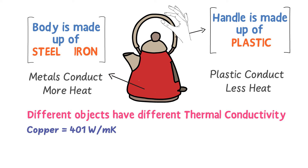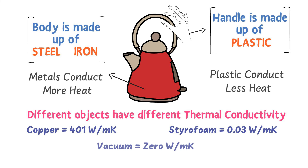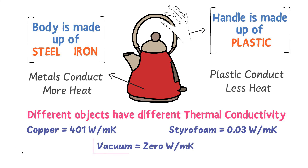Different objects have different thermal conductivity values. For example, the thermal conductivity of copper is 401 watts per meter kelvin. The thermal conductivity of styrofoam is 0.03 watts per meter kelvin. The thermal conductivity of vacuum is 0 watts per meter kelvin, meaning there is no thermal conductivity in a vacuum.